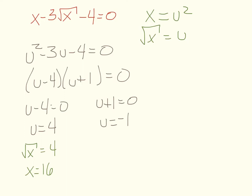A square root can never equal a negative number — except with imaginary numbers — so this is a red flag. We still square both sides and get x equals 1, but we should always check for extraneous solutions. An extraneous solution is one you've solved correctly, but the answer doesn't actually work when substituted back. An answer to an equation is a number that, when plugged in, gives a true statement.